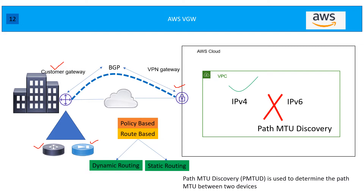First of all, you're going to have your VPC, which is the network boundary you create on the AWS network. VPG only supports IPv4 — IPv6 is not supported. It also doesn't support path MTU discovery, which is used to determine the MTU between two devices. Because there is always overhead from IPsec, it has no capability to discover the MTU value between two hosts, so you need to define it manually.